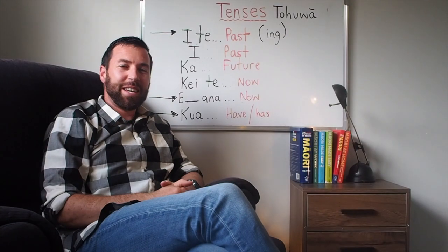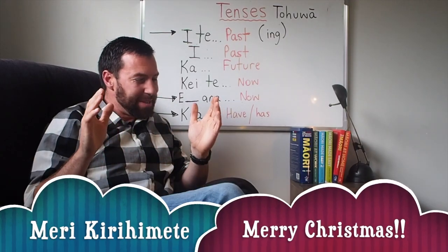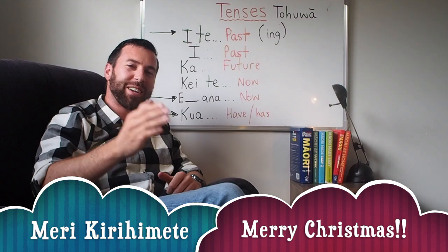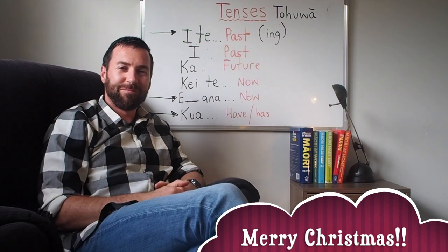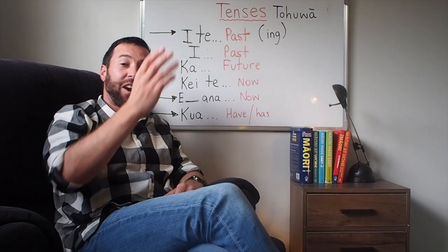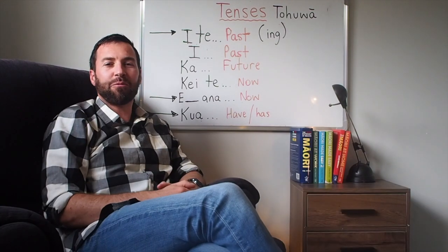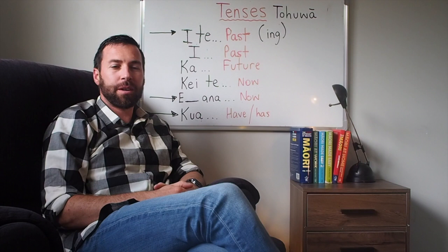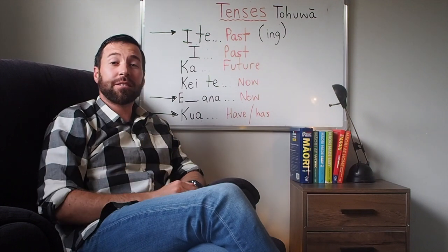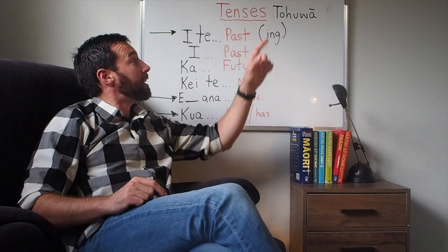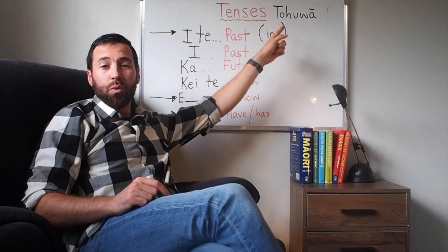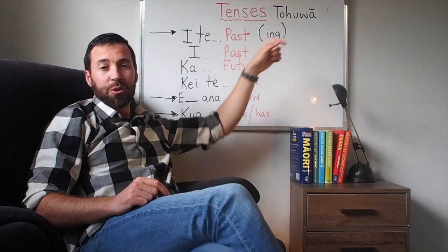Ahi ahi Māori, e mere kerehi mete ki a koutou, kaita pēhi a koutou. Ka raue haere mai ki No Frills Te Reo Māori, the tohu wā, part 2.